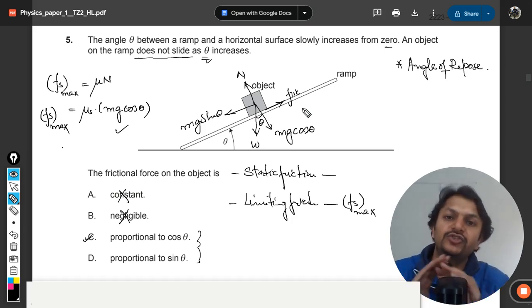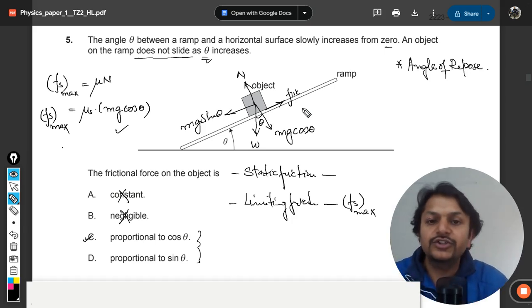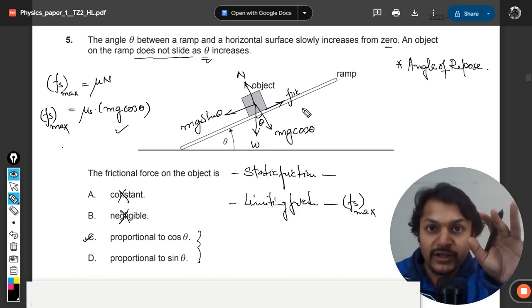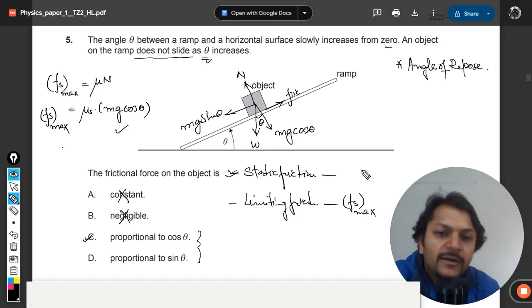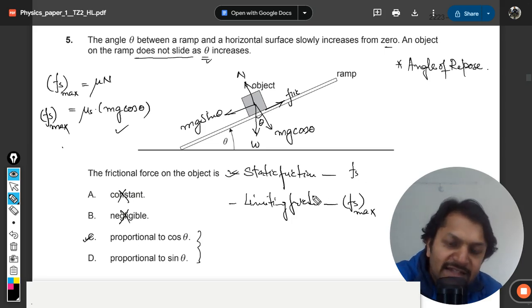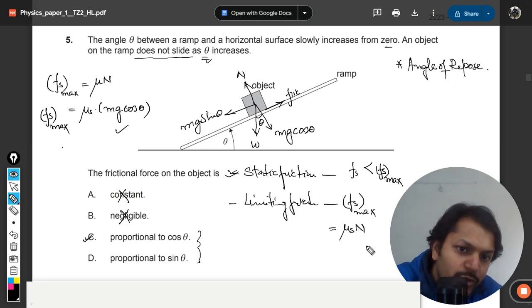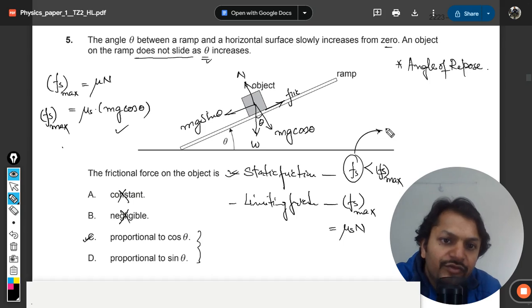So that is why be very careful here. I'm going to tell you this concept. So until the body is moving, the friction is fs, it is lesser than fs max. Fs max is given by mu s into N. So what about the magnitude of this?